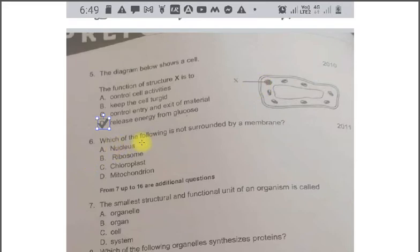Next question which of the following is not surrounded by a membrane. Note the word not surrounded. This makes the question tricky. The options are A. Nucleus. B. Ribosome. C. Chloroplast. D. Mitochondria. The correct option is B. Ribosome.